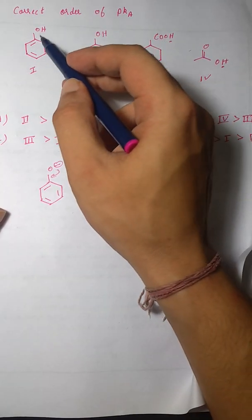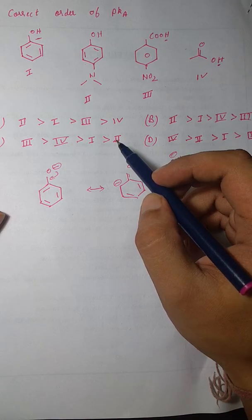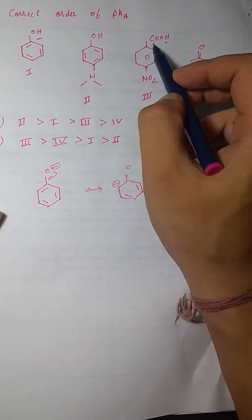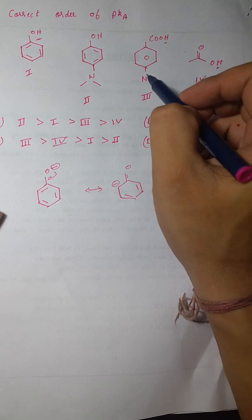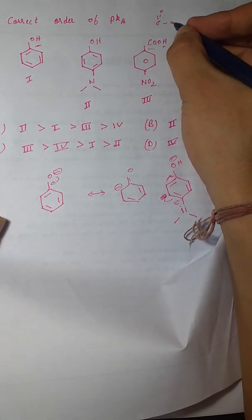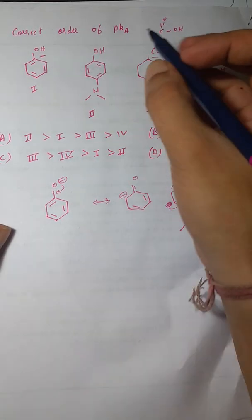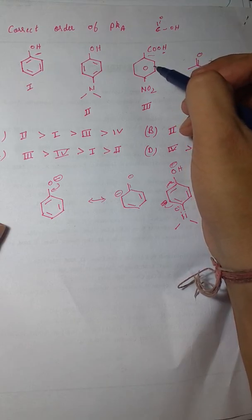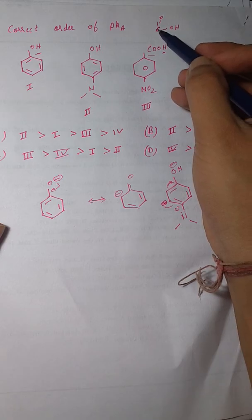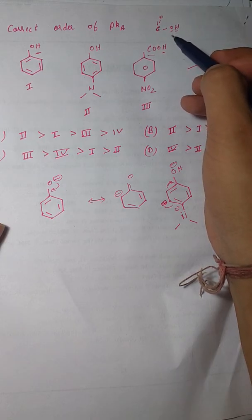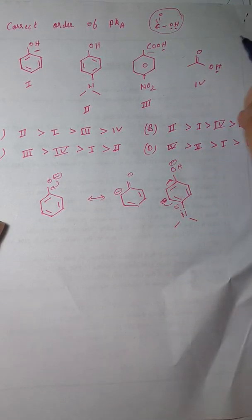There are two ways to find acidity: via the conjugate base or via polarity difference. In para-nitro benzoic acid, the nitro group is an electron-withdrawing group. The COOH group written as C double bond O with OH, combined with the nitro group at the para position, makes the carbon highly electronegative. This pulls electrons from the oxygen, creating a higher polarity difference between oxygen and hydrogen, making this compound the most acidic.